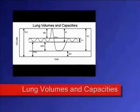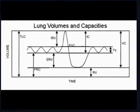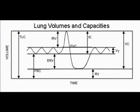Pictured here is a spirometry tracing showing all four lung volumes: tidal volume, inspiratory reserve volume, expiratory reserve volume, and residual volume, as well as all four lung capacities: inspiratory capacity, vital capacity, functional residual capacity, and total lung capacity. We will discuss each of these separately.